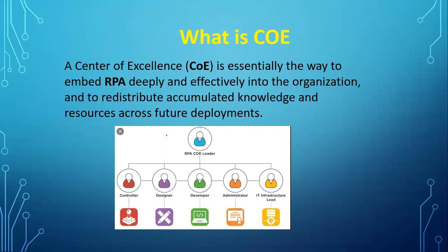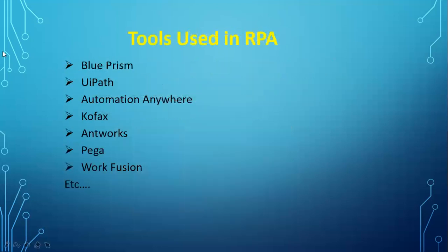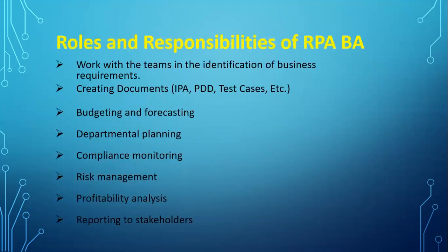During the development stage, the BA gathers any additional requirements the development team needs, liaises with the business team, and provides status updates throughout. Once development is complete, the BA manages the testing stage — checking validations, actual results versus expected results. After testing, he moves to UAT, sitting with the business team and the CoE team to validate results. Any missing items are communicated back to the technical team, and UAT sign-off is obtained.